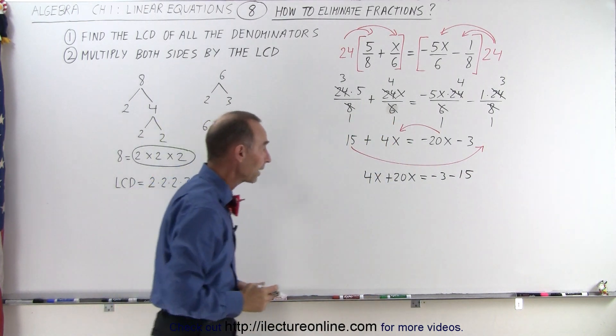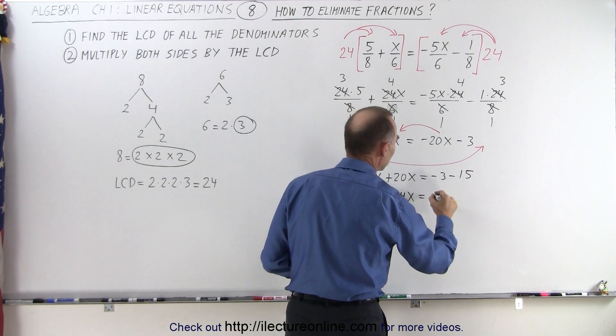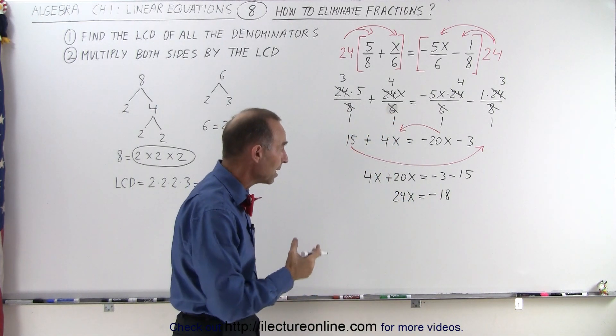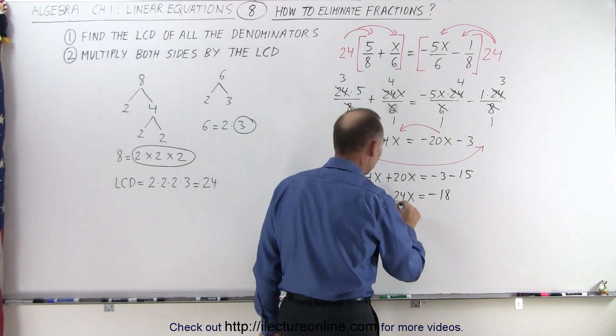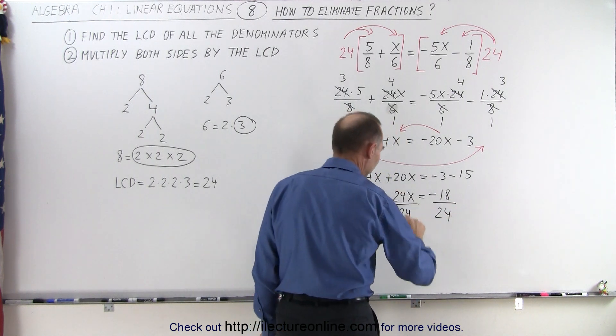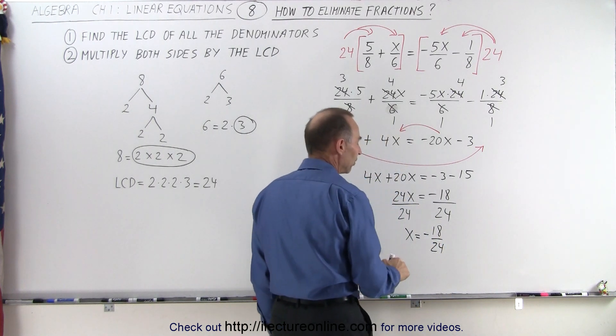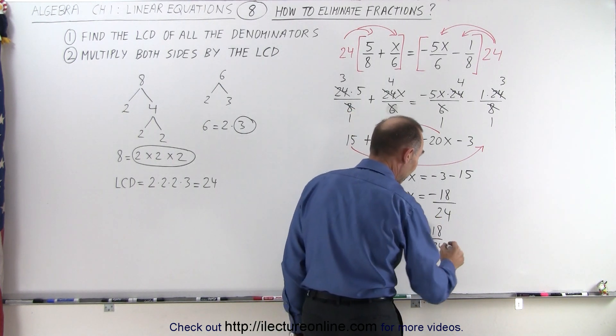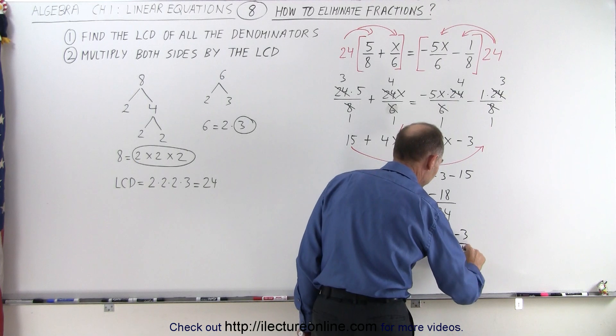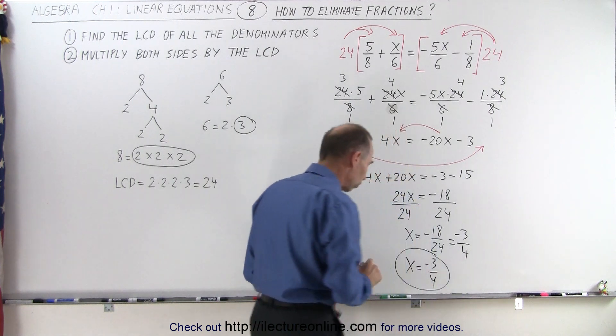We end up with 4x plus 20x on the left side equals minus 3 minus 15 on the right side. The next step is to combine like terms: 4x plus 20x is 24x equals minus 3 minus 15, which is minus 18. Then the last step is to divide both sides by the numerical coefficient in front of the x. Divide both sides by 24, so we get x equals minus 18 over 24. Both of these are divisible by 6, so 18 divided by 6 is 3, and 24 divided by 6 is 4. So x equals minus 3 over 4 as the final solution.